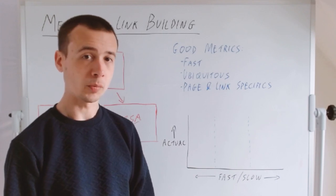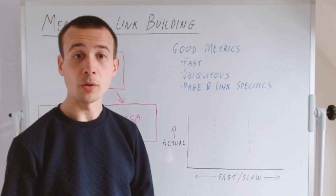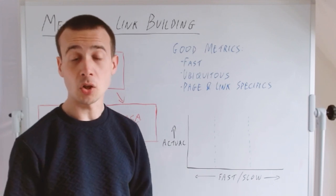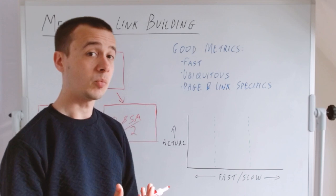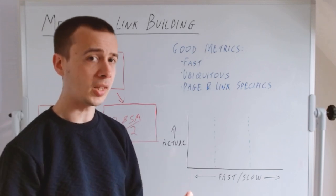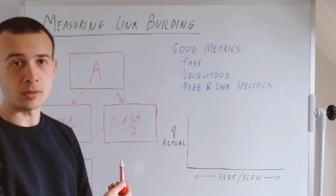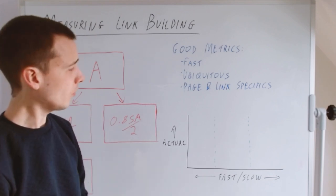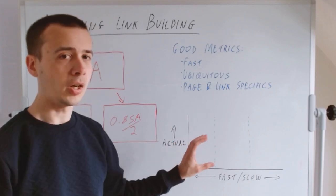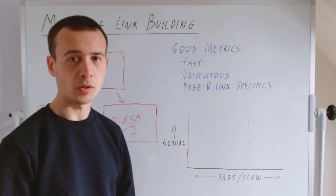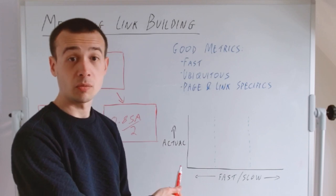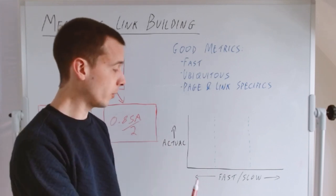But then there's this page and link level specifics that I just talked about. If I think about a metric like domain authority, it does very well on these first two qualities and does okay on this third one because it is trained on rankings to some degree. It does take into account some of this stuff, but ultimately it's a domain level metric, so it has to treat all the pages on one domain equally by definition.